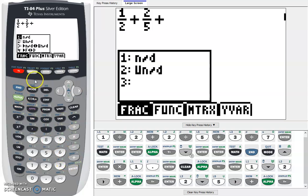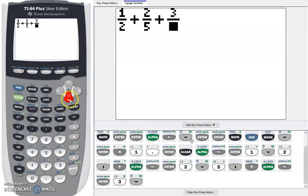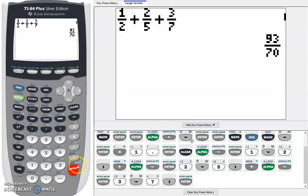So alpha and y equals. We'll press that same thing and we'll do 3 over 7. We'll get out of that. And then we have all those fractions written nicely. We can press enter again and now we get 93 70ths.